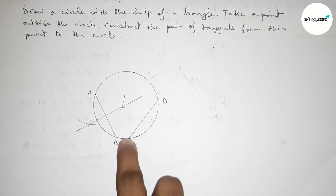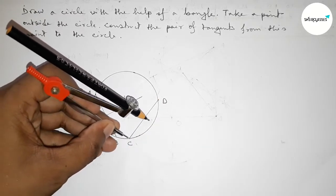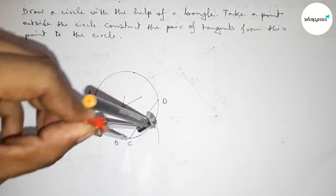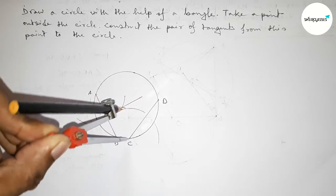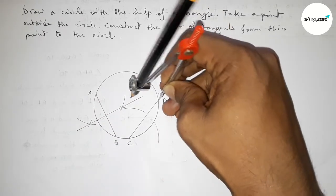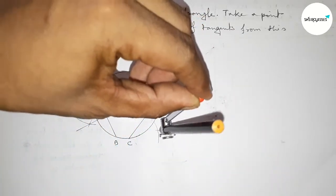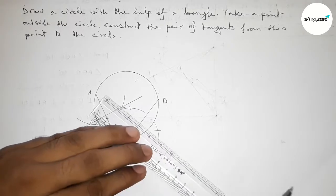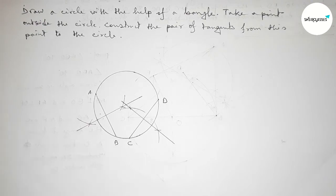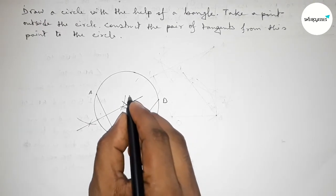Similarly, we have to bisect the chord CD. Taking greater than half of CD and drawing an arc by this way, with the same length. Putting the compass here and cutting here and here. Now joining this line. Both bisectors meet each other at a point.